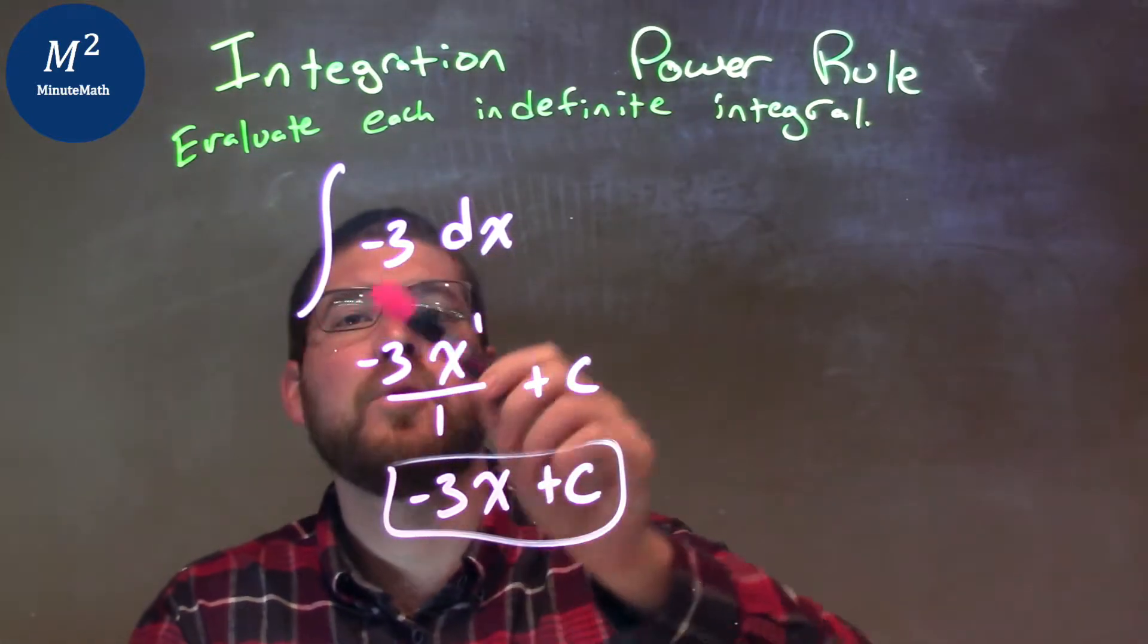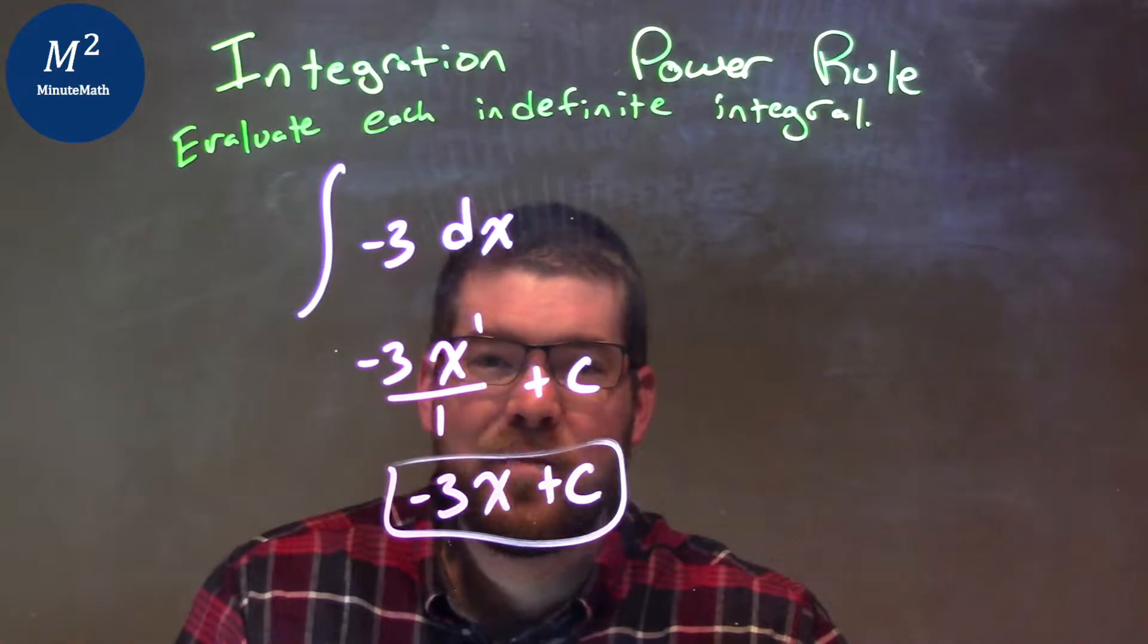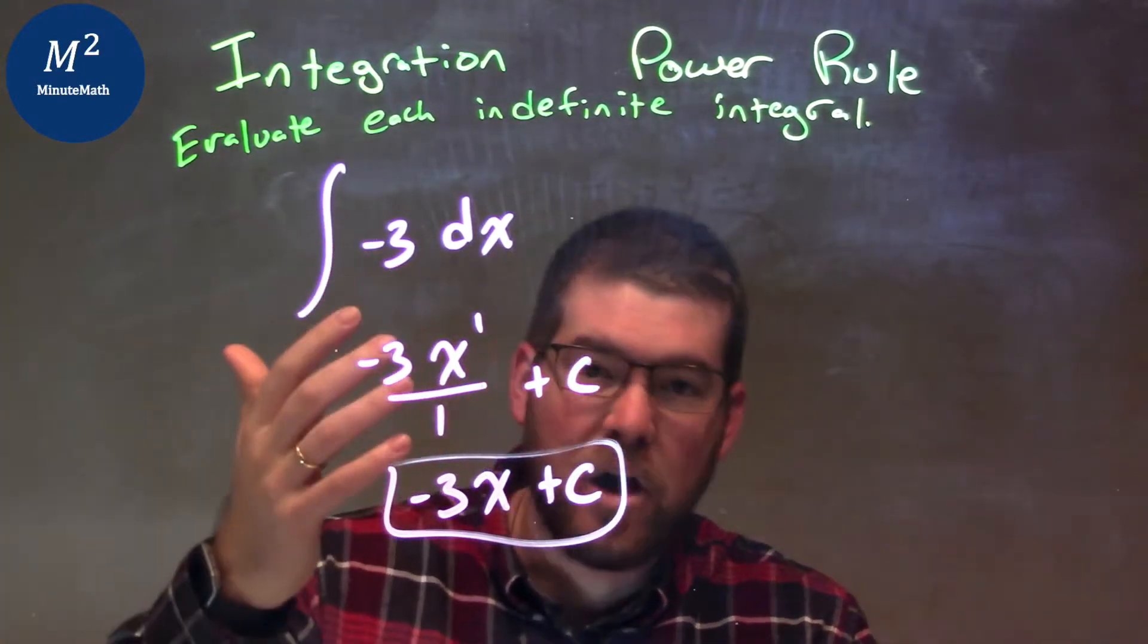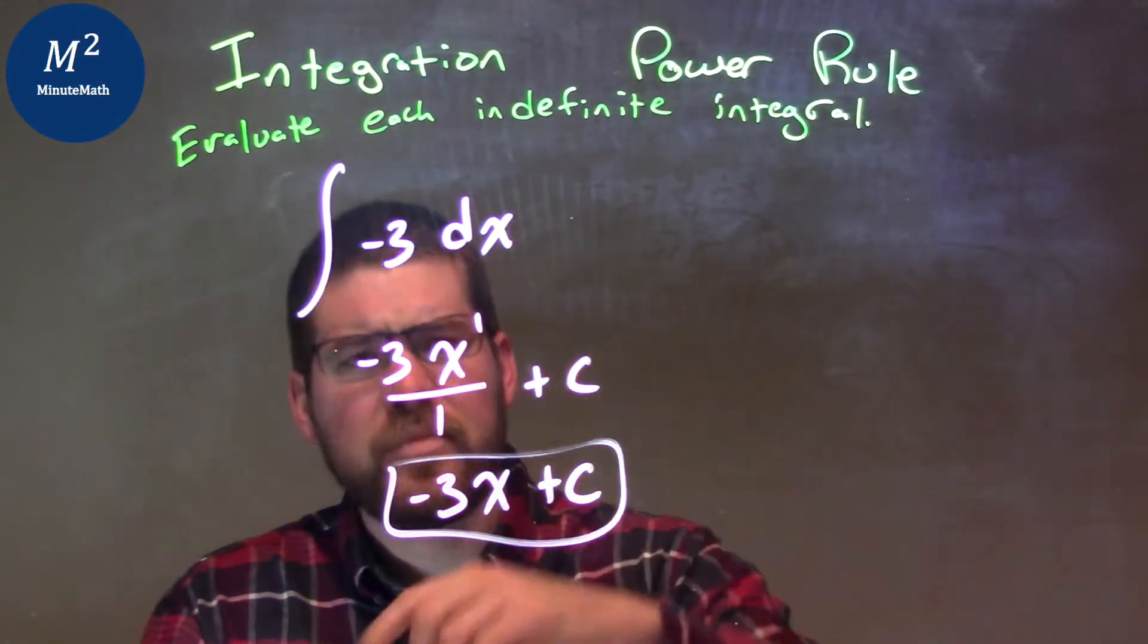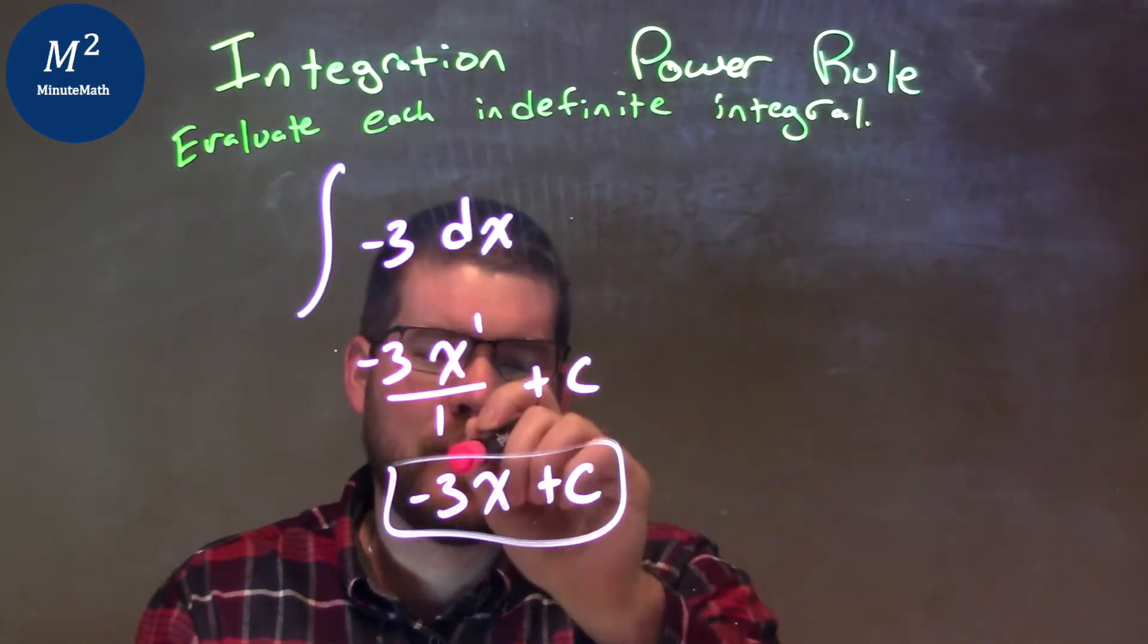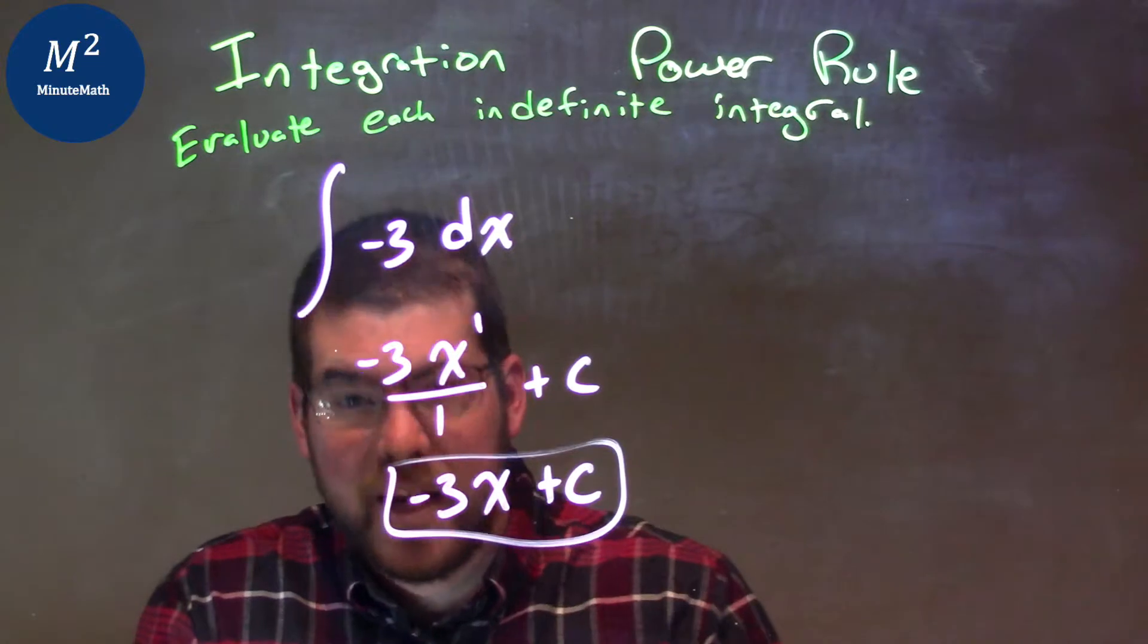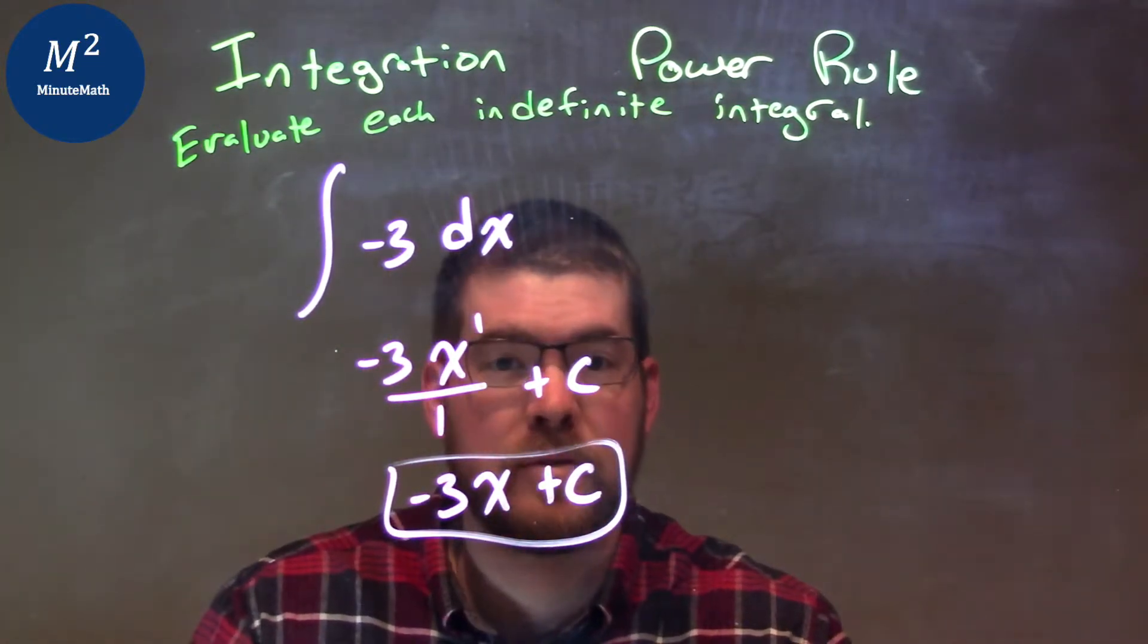Let's recap. We're given the integral of negative 3 dx. To take the integral of negative 3, we keep the constant there and kind of toss in the x-value. So we have negative 3x to the first power divided by 1 plus C. Simplifying that, our final answer is negative 3x plus C.